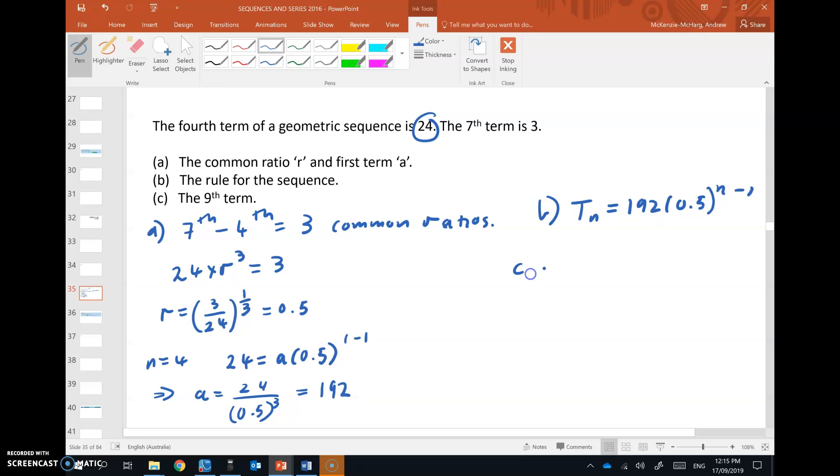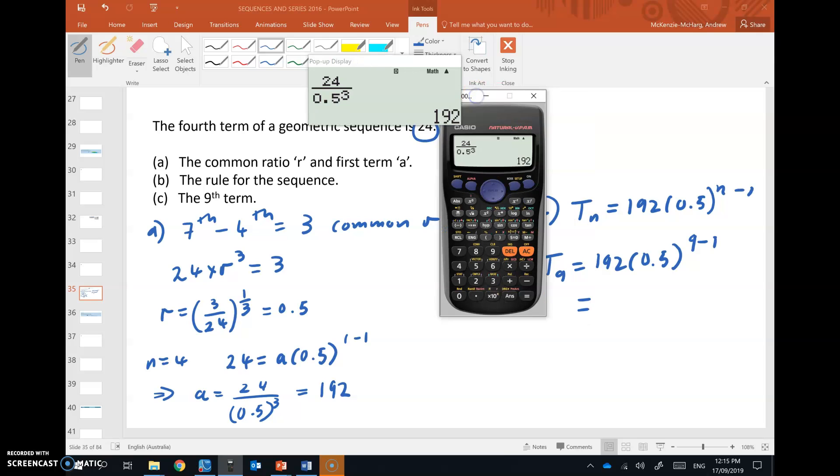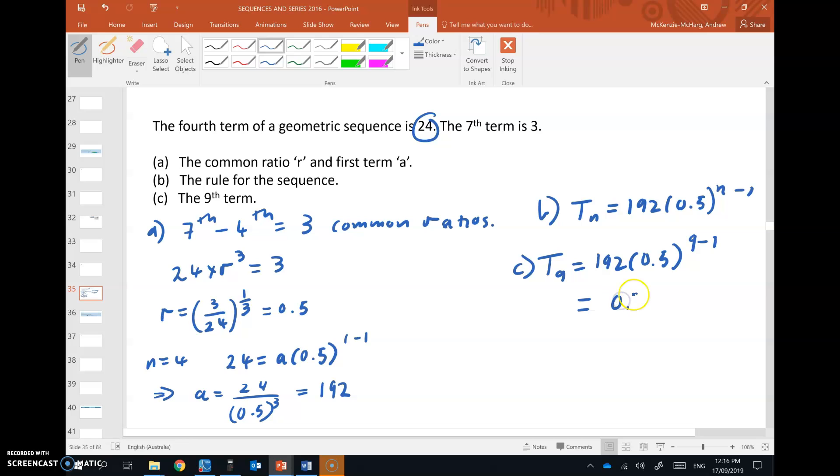Part c, the ninth term. t9 is 192 by 0.5 to the 9 take 1. Which gives us 0.75. Go ahead and check the description for the video and try some of these questions. Thank you.